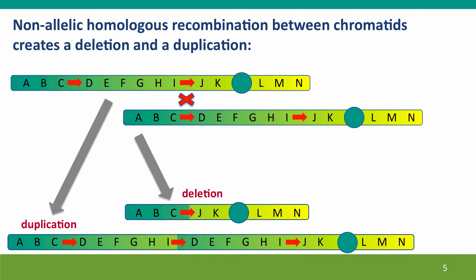These recombination events can happen between repeats on the same chromosome, as shown here, but they can also happen between repeats on different chromosomes or between repeats that are in different orientation on the same chromosome, and these will have dramatically different consequences.